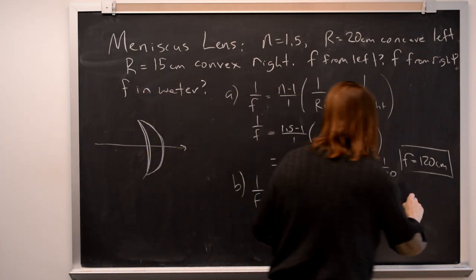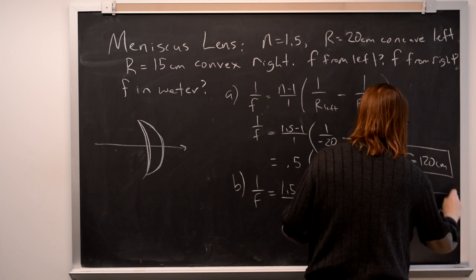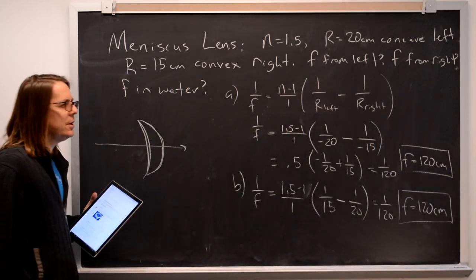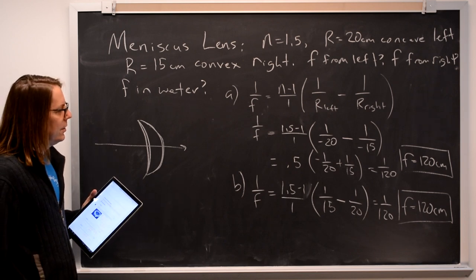F, if you go this way, is 120 centimeters. If you can make a lens that has a focus different going one way or the other, I think you can break the laws of physics. I'm not sure.